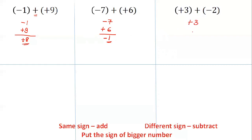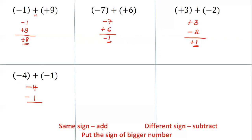Now add plus 3 and minus 2. Write one below the other and look at their signs. Both have negative sign — wait, if they have the same sign, you have to add. Put the sign of the bigger number. Remember the same rule applies for both same and different signs: always put the sign of the bigger number. The sign of 4 is minus, so the answer will have a negative sign.